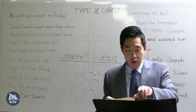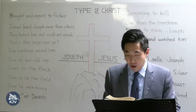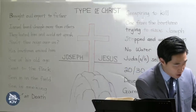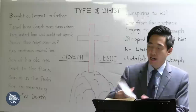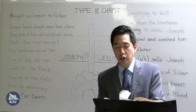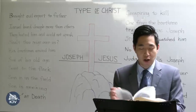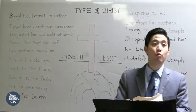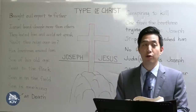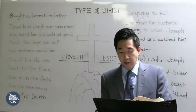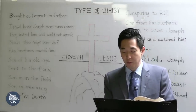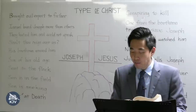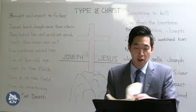Also notice that the brothers asked at verse 8, 'Shalt thou indeed reign over us?' — they questioned and mocked whether he would rule over them. Go to Luke chapter 19, verse 14. They refused to let Joseph reign over them; likewise, Luke 19:14: 'But his citizens hated him and sent a message after him saying, We will not have this man to reign over us.'